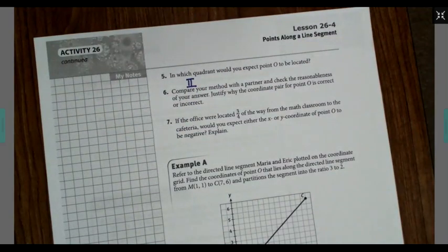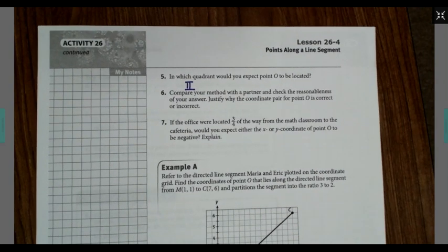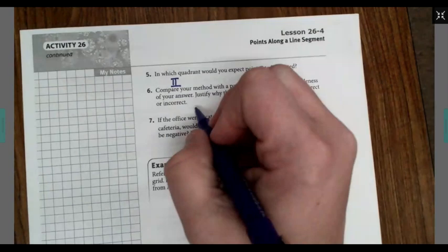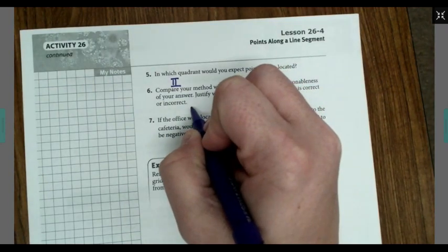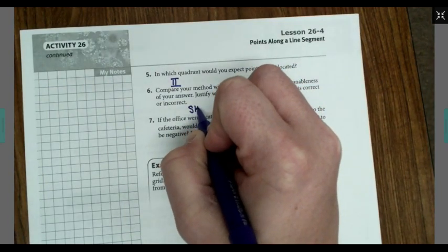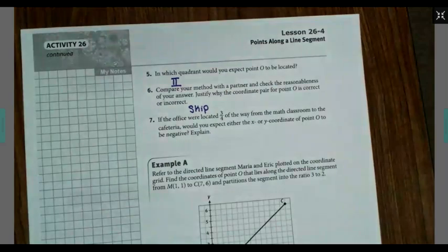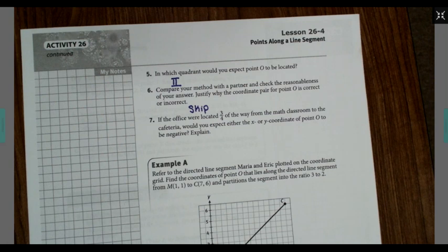Compare your method with your partner and check the reasonableness of your answer. Justify why the coordinate pair for point O is correct or incorrect. If the office were located three-fourths of the way from your math classroom to your cafeteria, would you expect the X or the Y coordinate of point A to be negative and explain?